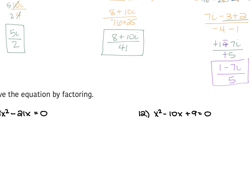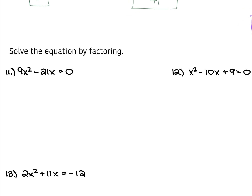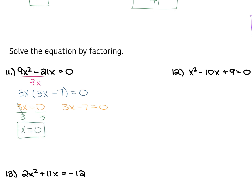The next part of your review asks you to solve the equation by factoring. For number 11, we have 9x squared minus 21x is equal to 0. You only have two terms on the left side — they both have an x attached and are both divisible by 3. So we factor out the greatest common factor, which is 3x. That gives us 3x times 3x minus 7 is equal to 0. We set each part equal to 0: 3x equals 0 gives x equals 0; for 3x minus 7 equals 0, add 7 over to get 3x equals 7, then divide by 3 to get x equals 7 thirds.